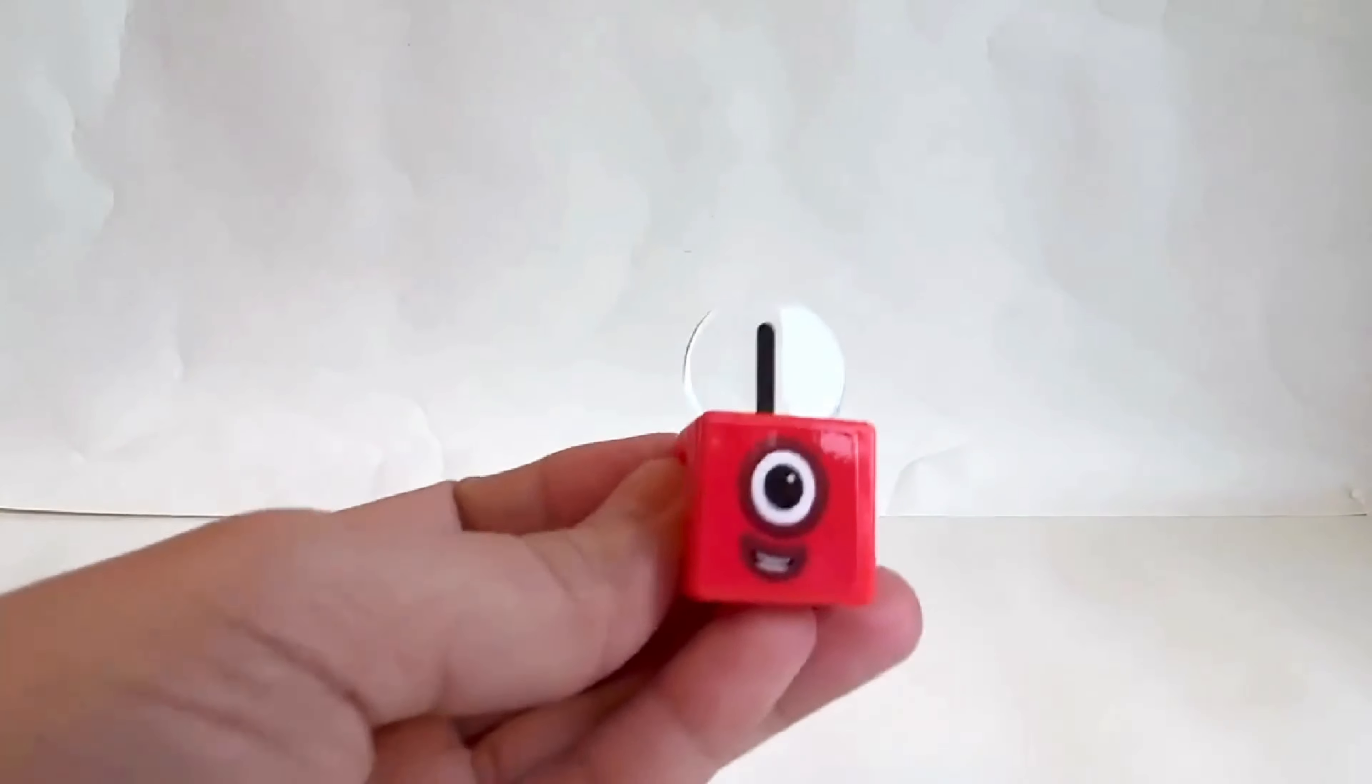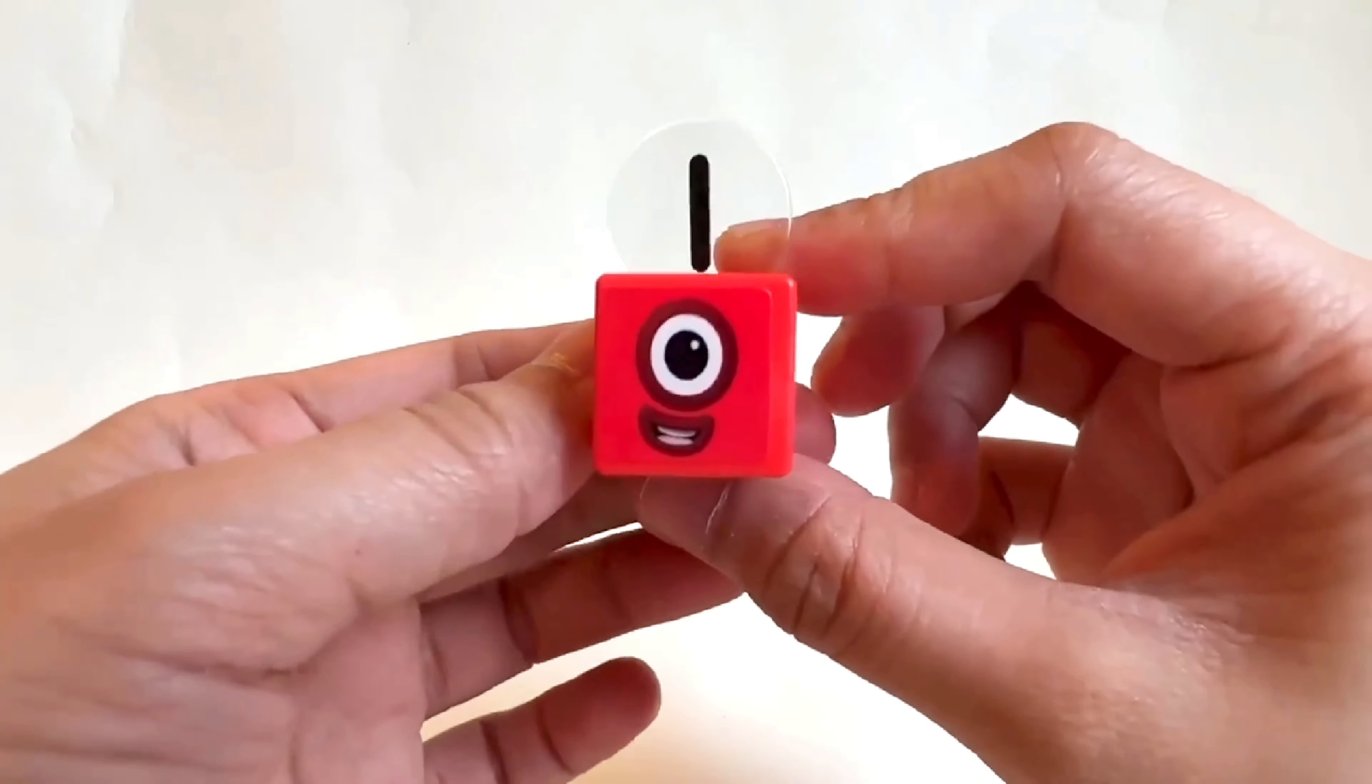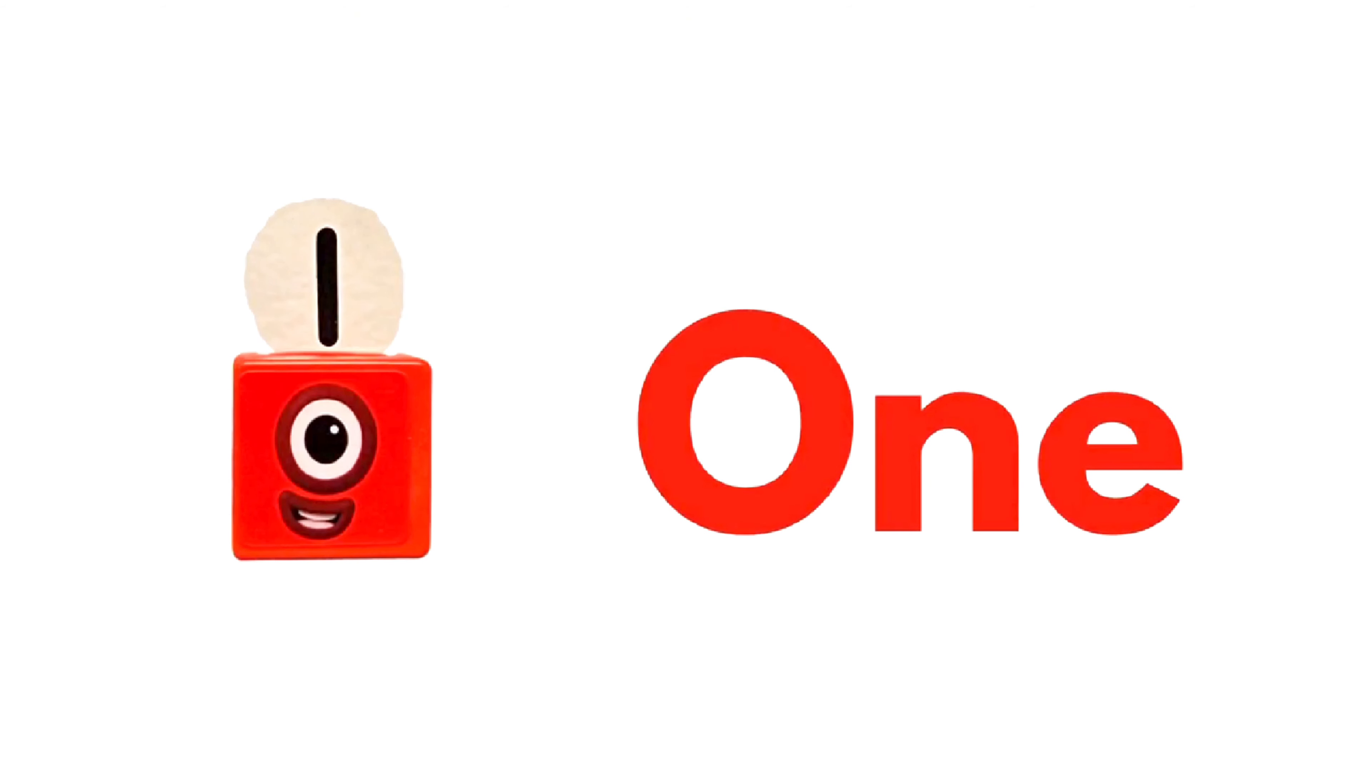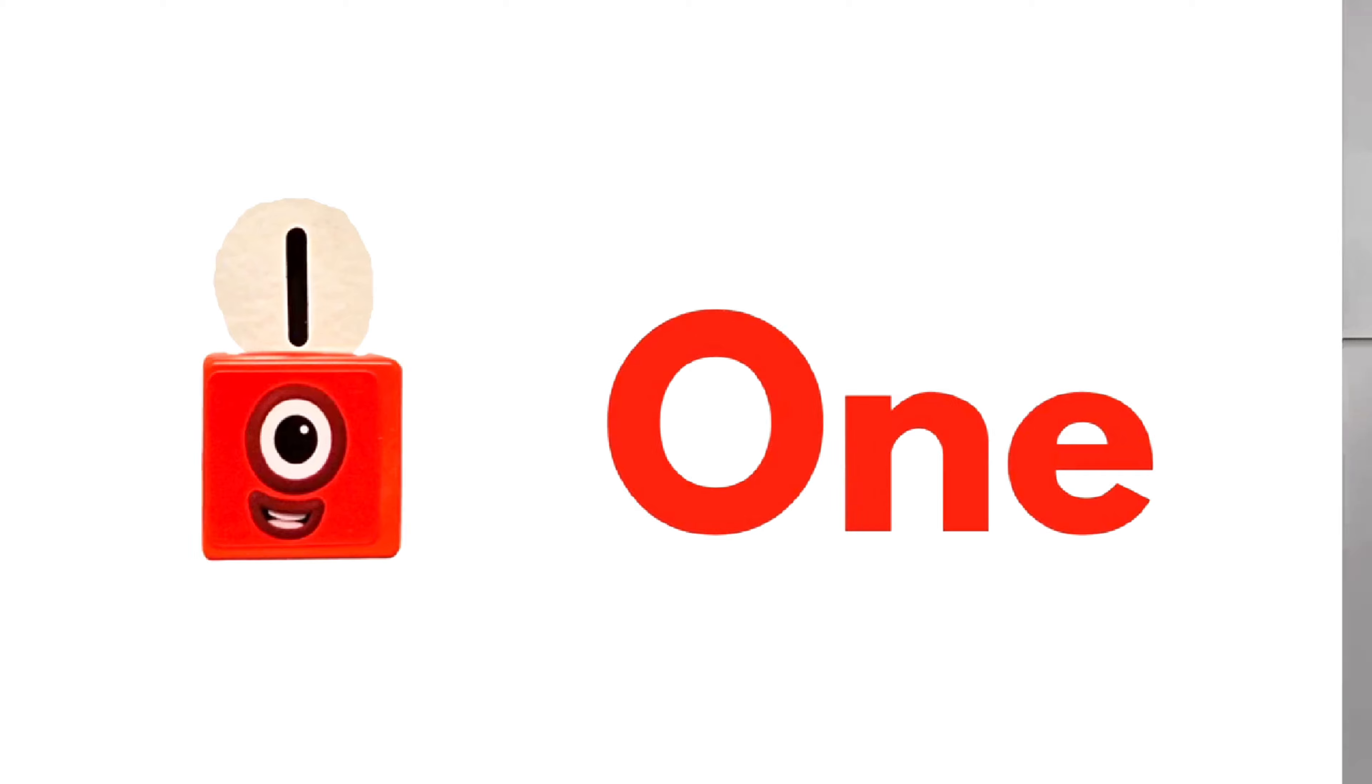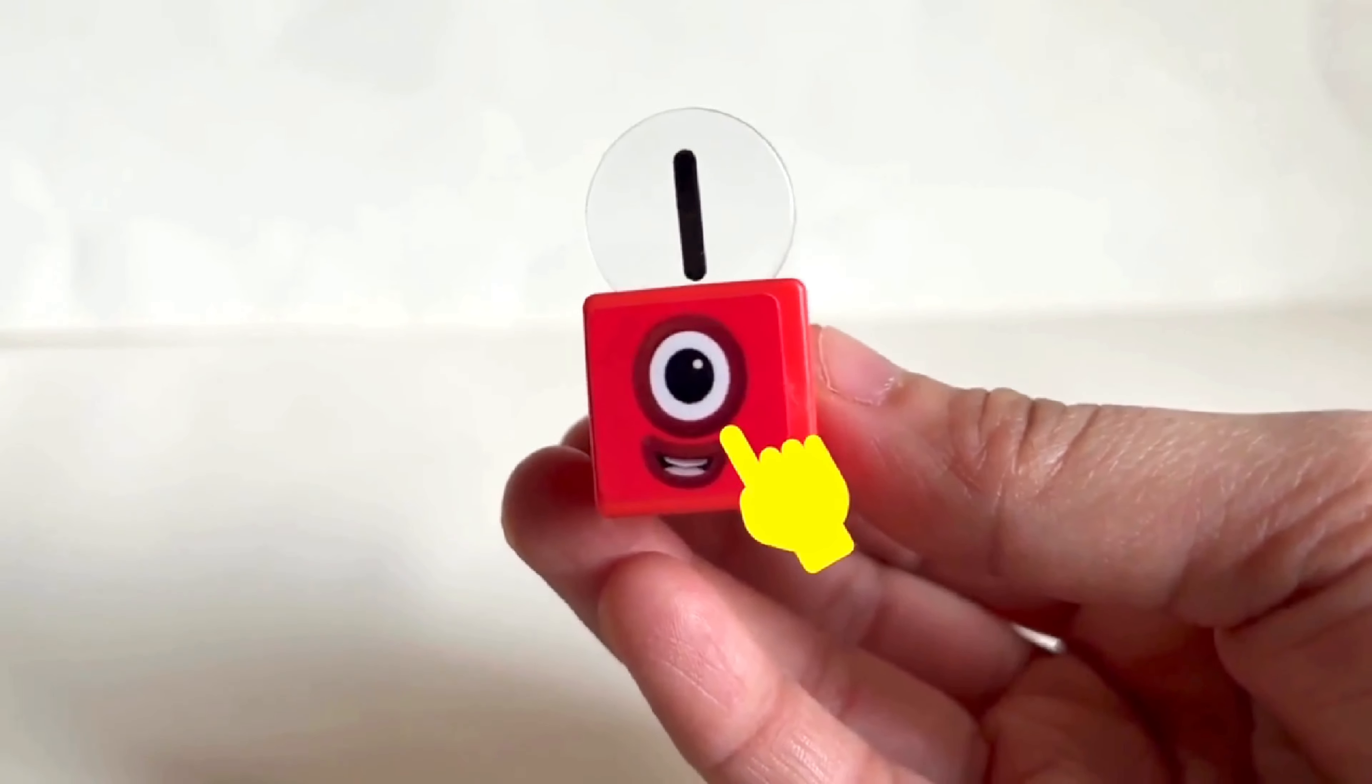Our first number block is number block 1. It's the number 1. Can I see 1? Great! Now let's count with number block 1. One.